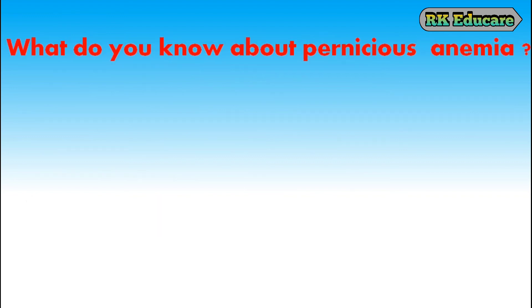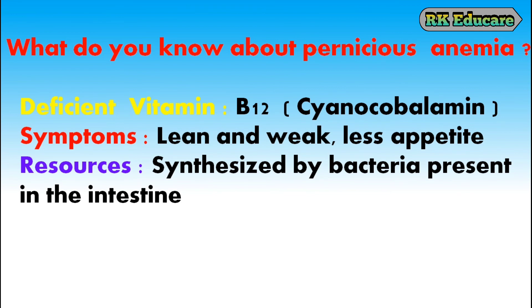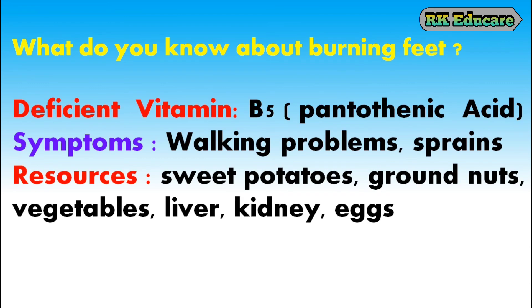What do you know about pernicious anemia? Pernicious anemia is due to deficiency of vitamin B12, also called cyanocobalamin. Symptoms include leanness and weakness, and loss of appetite. This vitamin is synthesized by bacteria present in the intestine. What do you know about Burning Feet? Burning Feet disease is due to deficiency of vitamin B5, also called pantothenic acid. Walking problems and sprains are symptoms.